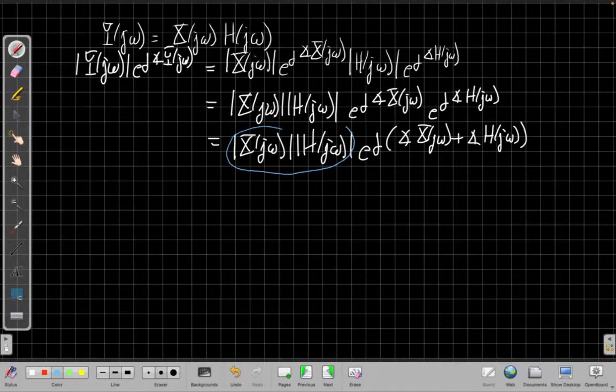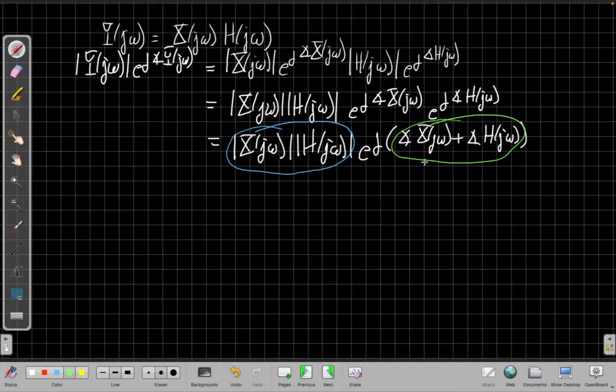So by moving things around, I've made it quite clear now that this first piece here is the magnitude. The magnitude of y, the magnitude of the output, will be the product of the individual magnitudes, whereas the phase will be the sum of the phases. And that's the way multiplying complex numbers work. When I multiply two complex numbers, I multiply their magnitudes and I add their phases. So let me pull that out into separate equations for the magnitude and phase.